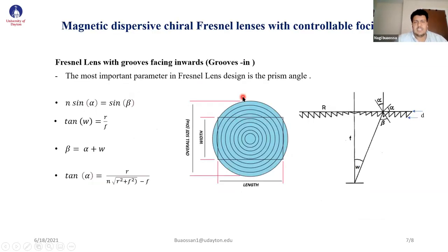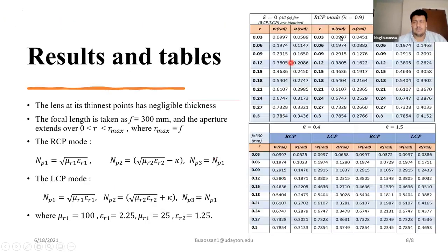Then we use the magnetic dispersive chiral Fresnel lens with controllable foci as an application to study the behavior of chiral material. Alpha is the incident angle, beta is the transmitted angle, and R is the radius. We study some cases for that.